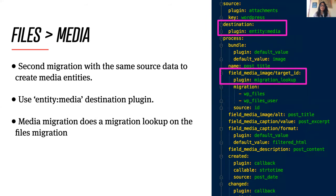The second part of this process is, once you have your file entities imported, you create your media entities from them. There is also a ready-to-go destination plugin called entity:media. As part of that process, you need to do a migration lookup on the files migration that just occurred to make the link or reference between the media entity and the file entity. That in summation is the general process for getting media entities into a Drupal system.